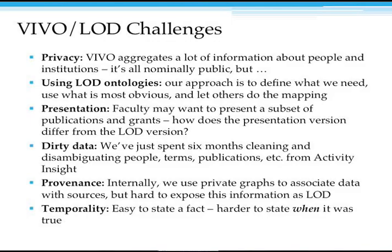What are some of the challenges we face as we make VIVO information available as part of the cloud? One of these that's come up with several institutions is privacy. Cornell is an opt-out of making directory and other information available. There are institutions that are opt-in, where you have to get the faculty member's permission before you can publish any information about them. There's also a concern that if you aggregate a lot of information about people, you can reach some sort of privacy limit.